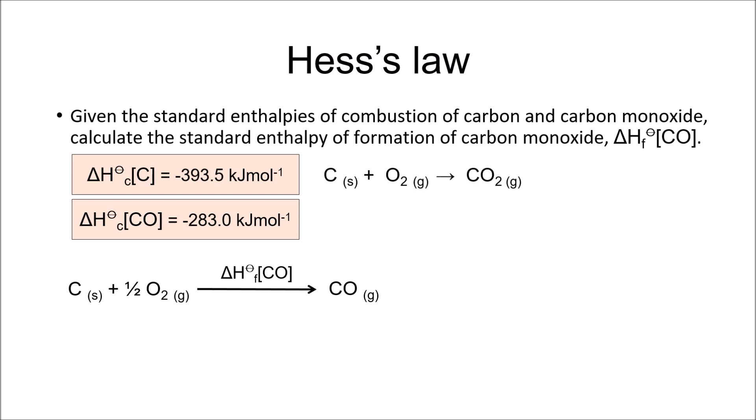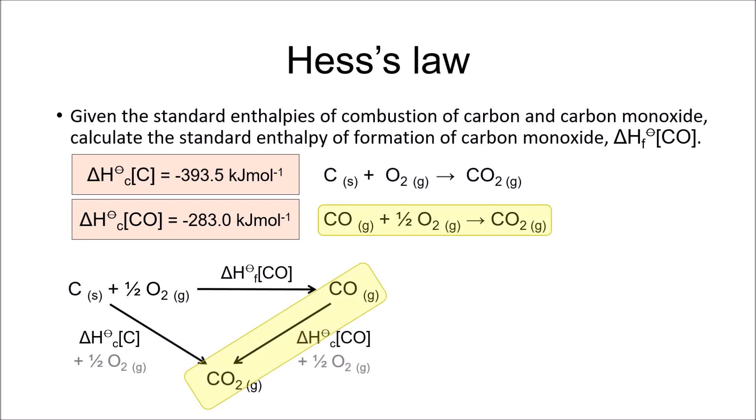Then, I'm going to add the equation for the enthalpy of combustion of carbon to my diagram. Now I can add the equation for the enthalpy of combustion of carbon monoxide, which completes my diagram. Note that the products of both combustion reactions coincide. Now find where all the arrows start from, and where all the arrows end. This will allow us to determine the two routes for which the enthalpy changes are identical.